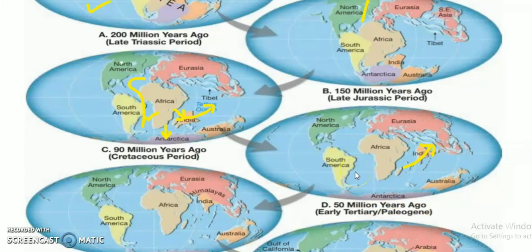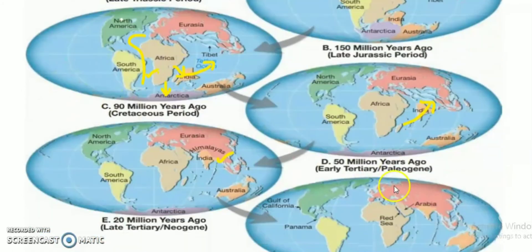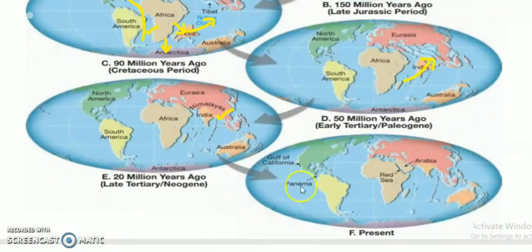The collision formed mountains — and now we have the Himalayas. So the Himalayan formation process began about 50 million years ago. Also, Antarctica and Australia separated, and this brings us to the present condition of all the continents.